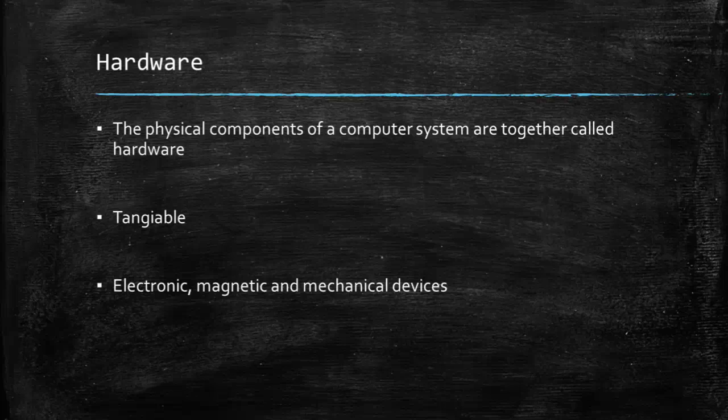Now let's discuss the physical components of a computer system. The physical components are together called hardware — these are the tangible parts which we can touch, which can break, which can be repaired, and which consist usually of electronic circuitry. Examples include the hard disk, monitor, CPU, cables, peripheral devices, printer, and keyboard. These are electronic as well as magnetic or mechanical devices. They can be classified into four categories: input devices, output devices, central processing unit, and memory devices.